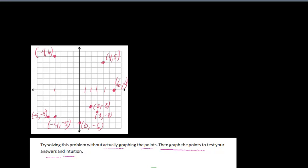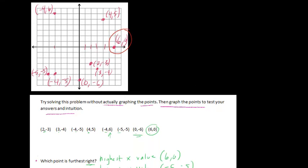So the furthest to the right, if we have all these combinations here, is (6, 0). You can see it right there. And that was our answer. The lowest x value for furthest left is (-5, -5) here. Which we got that one right as well.